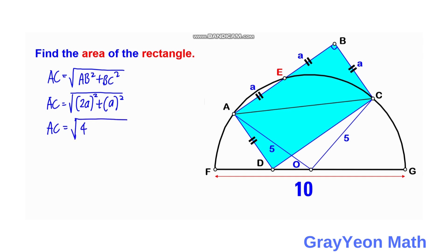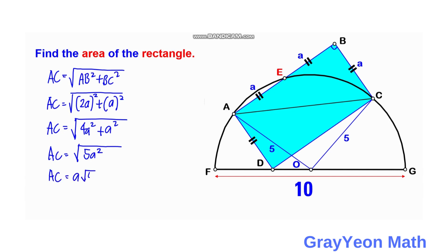So AC is equal to the square root of 4a² plus a², which is the square root of 5a², so AC equals a√5.